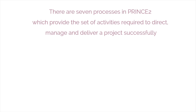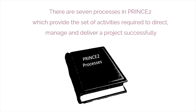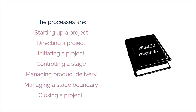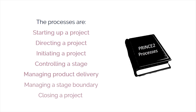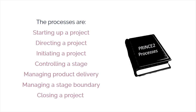There are seven processes in PRINCE2 which provide the set of activities required to direct, manage, and deliver a project successfully. The processes are: starting up a project, directing a project, initiating a project, controlling a stage, managing product delivery, managing a stage boundary, and closing a project.